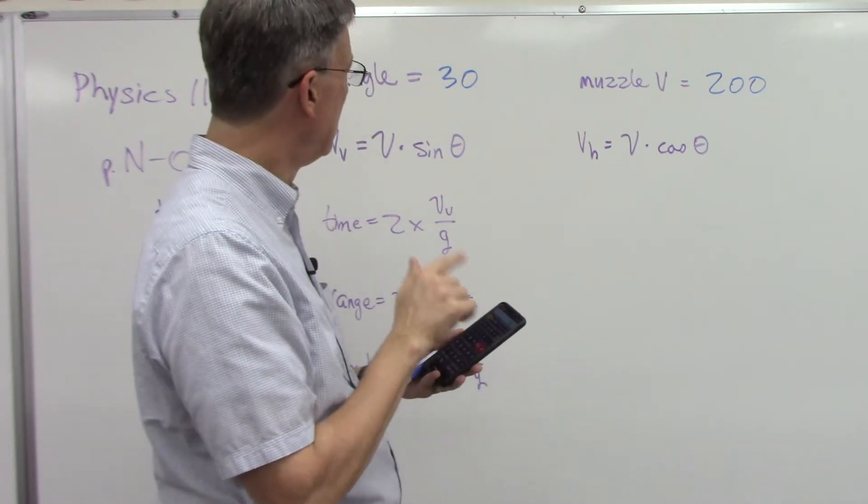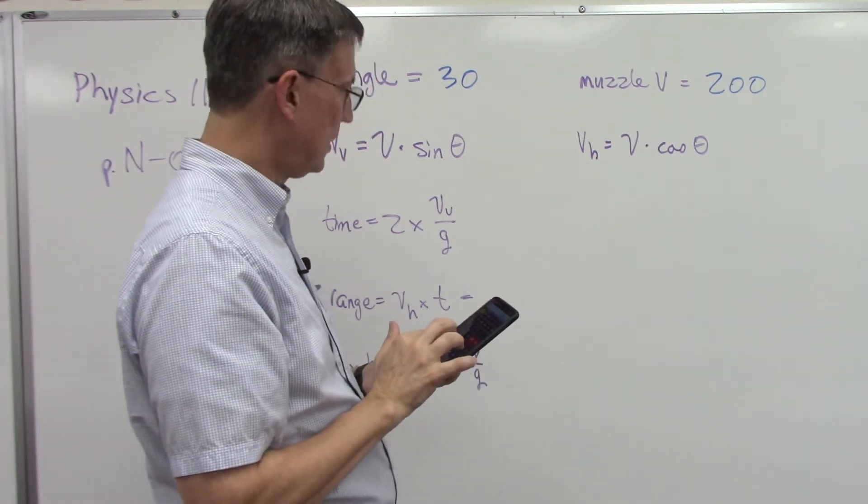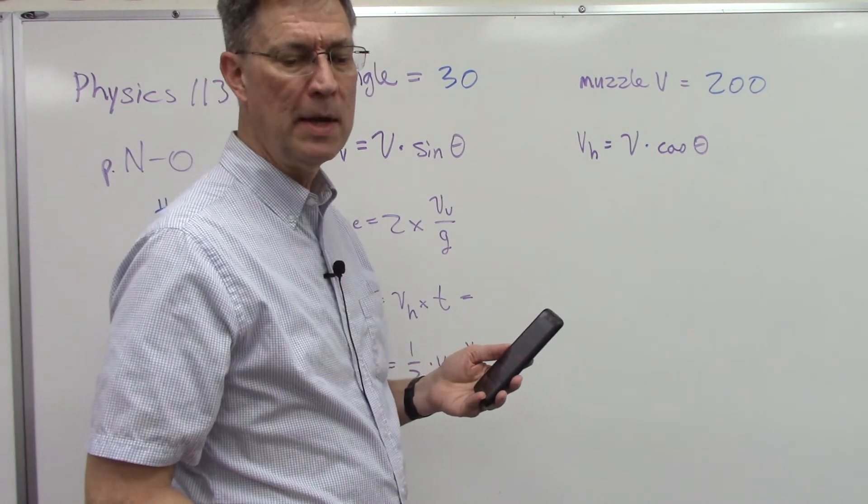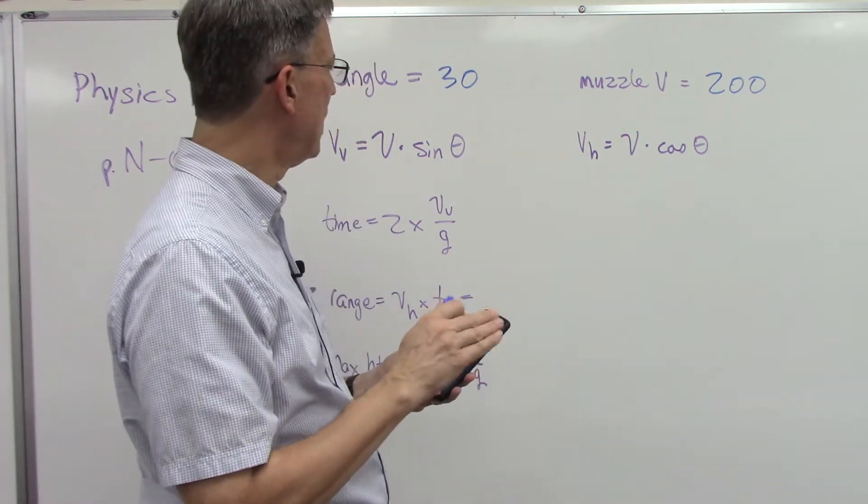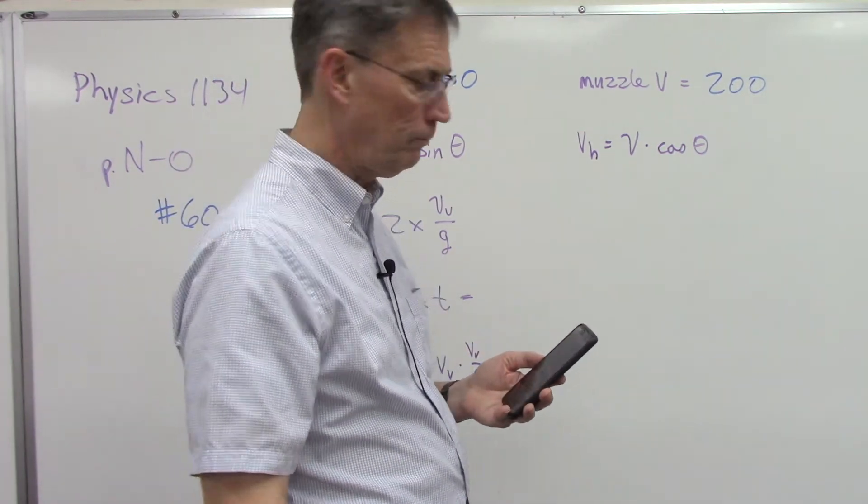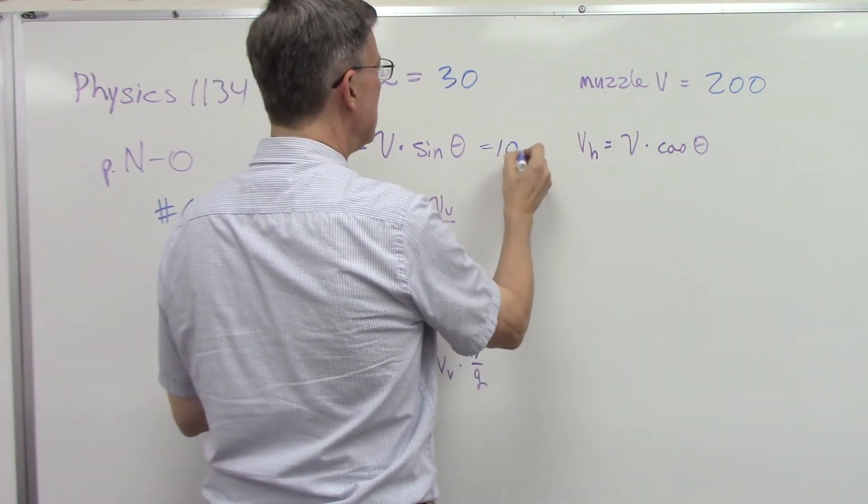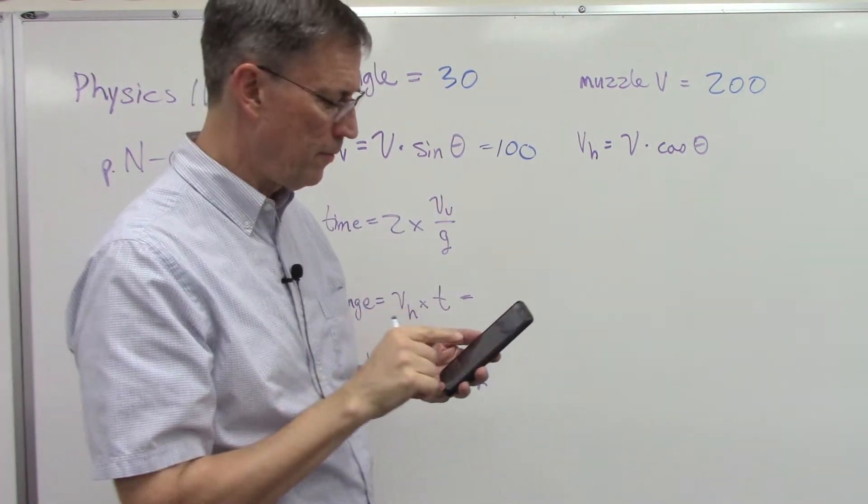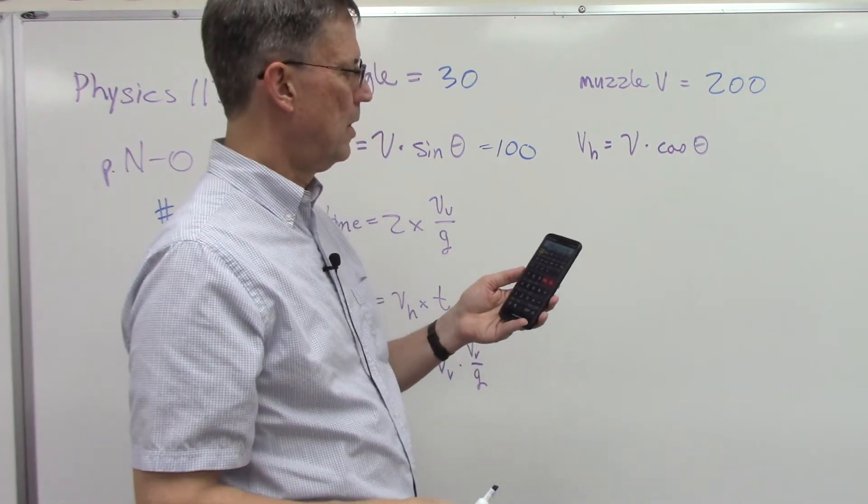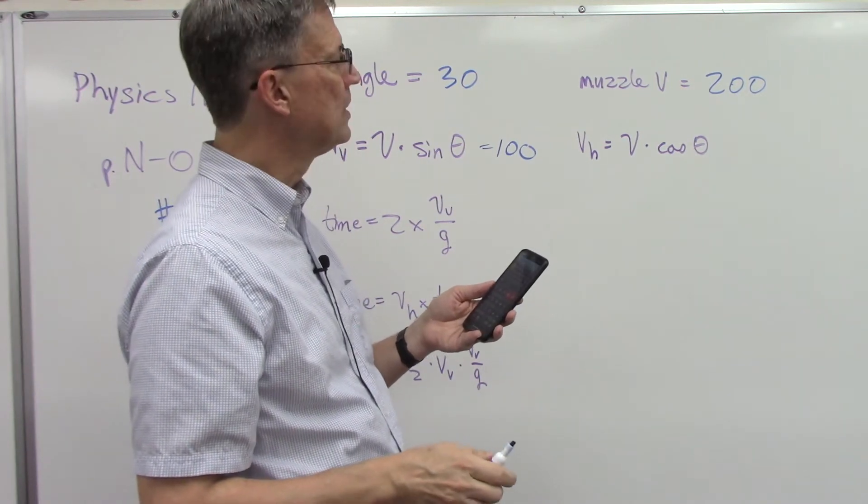So we take 200 times, actually on my calculator I need to first do 30 and hit sine, and then take that times 200. Do it with me, don't copy my answer. You do it. Make sure you do sine of 30, multiply that times 200. You should have gotten 100, and that's because the sine of 30 is 0.5. Now let's do 30 cosine, that's a much longer number, 0.866025 blah blah blah.